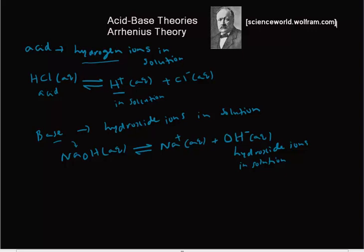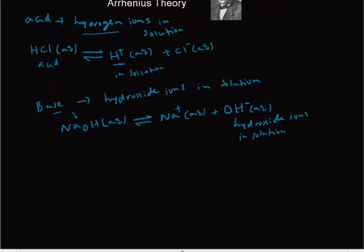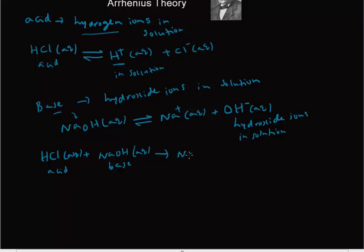Now let's understand what happens when we react HCl and NaOH. So I have HCl aqueous reacting with NaOH aqueous. HCl is an acid because it can produce H⁺ ions; NaOH is a base because it produces OH⁻ ions — giving us salt plus water, H₂O.